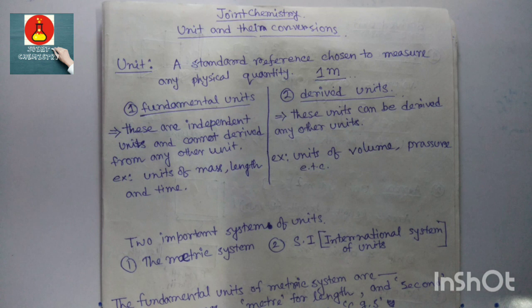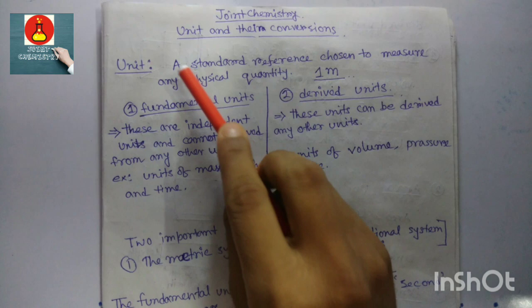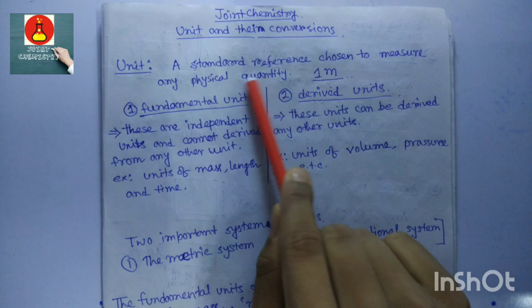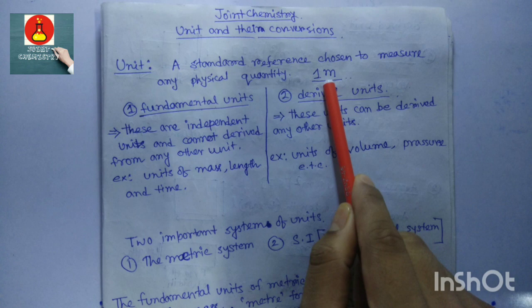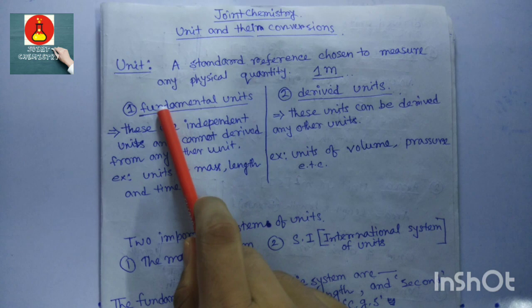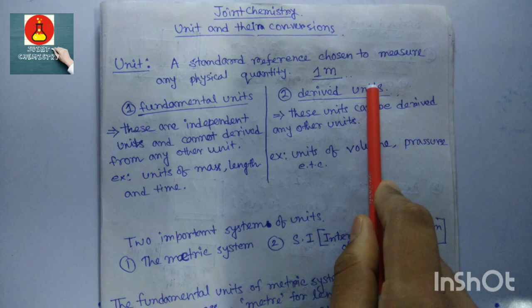Hello students, welcome to joint chemistry. Today we will learn about units and their conversion. A standard reference chosen to measure a physical quantity is known as a unit. A standard reference is a basis value which is established to measure any quantity. For example, one meter is a basic value to measure length — this is a reference standard.